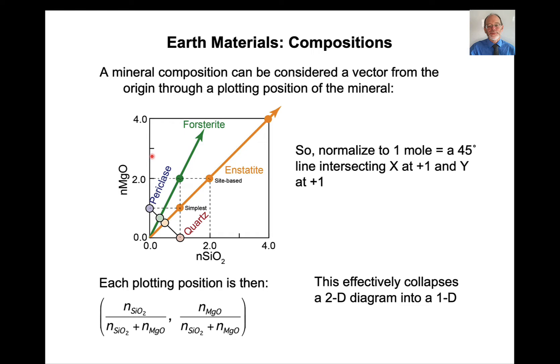So what do we do? We end up defining a binary composition diagram in terms of the intersection point of the vector with a 45 degree line that goes from one mole on our x-axis to one mole on our y-axis. That seems really kind of esoteric, but it's really pretty straightforward. What this does is it sets up a plotting position where the x direction is number of moles of SiO2 divided by the number of moles of SiO2 plus MgO, and the y position is number of moles of MgO divided by the number of moles of SiO2 plus MgO. So enstatite, equal proportions, one half, one half, one divided by two, one divided by two.